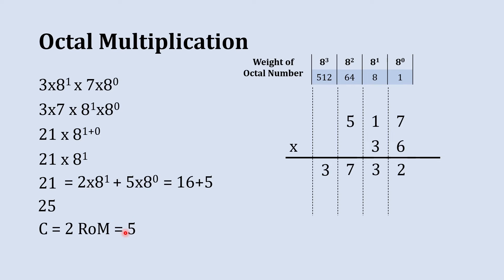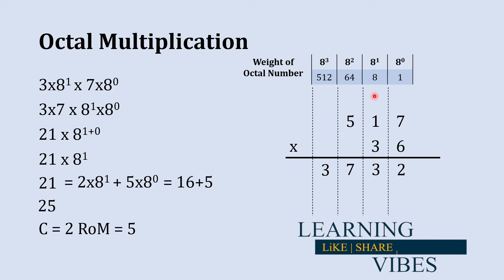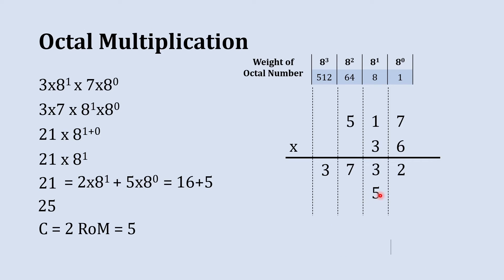If you are getting confused about the octal-to-decimal conversion, I have created a separate in-depth video about how to convert octal numbers into decimal numbers. The link of that video will be shown here and in the description, so you can watch that video later. Right now, focus here. So from 25, 2 will be carry forwarded to the next column and 5 will be the result of our multiplication, placed at the 8 raise to 1's place.